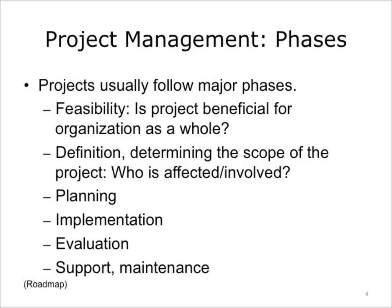A project is usually defined in phases. The number and types of phases are solely dependent on the project at hand. However, some of the more common phases include: determining feasibility — the process of determining if undertaking the project will net beneficial outcomes for the organization; definition and determining the scope of the project — who is affected, who will be involved, and what other factors are relevant; the project planning phase — developing a roadmap for project success; the project implementation phase — actually doing the work; evaluation; and support and maintenance — determining the project's net benefit and putting in place processes to ensure longevity.